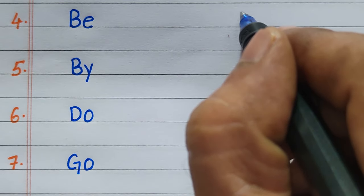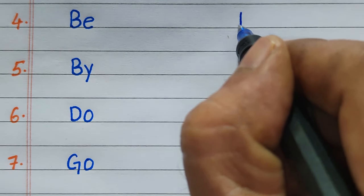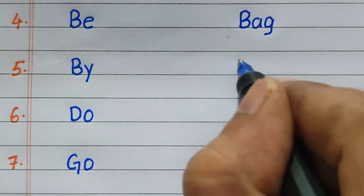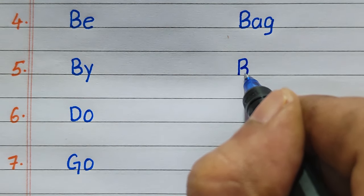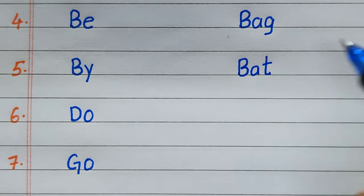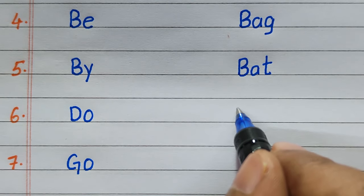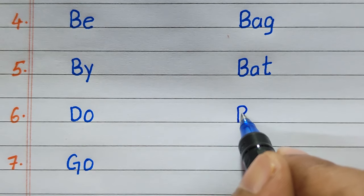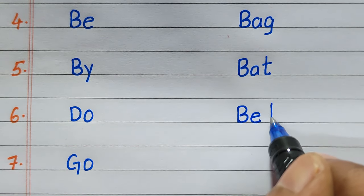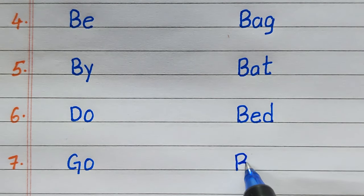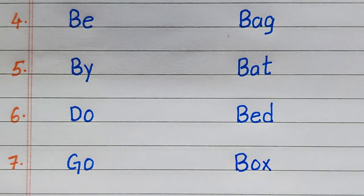Whereas the fourth three-letter word is BAG. The fifth three-letter word is BAT. The sixth three-letter word is BED. The seventh three-letter word is BIG.